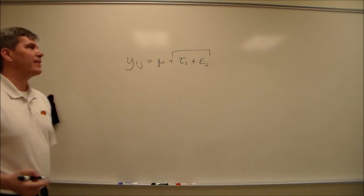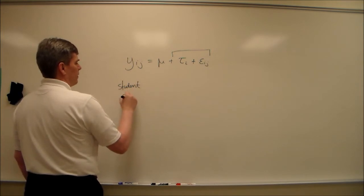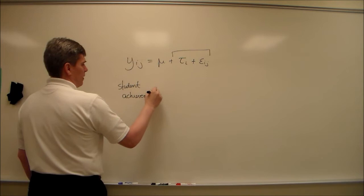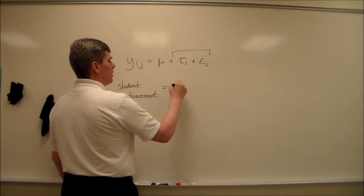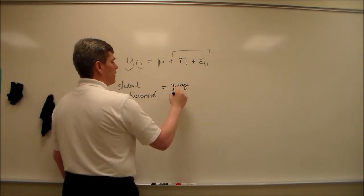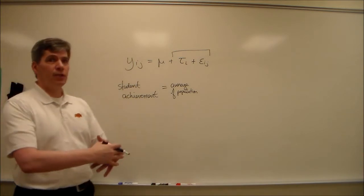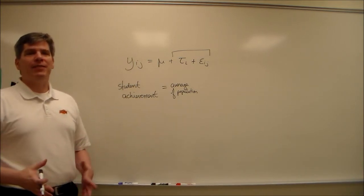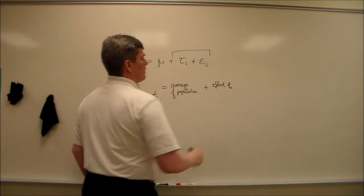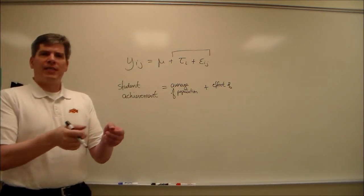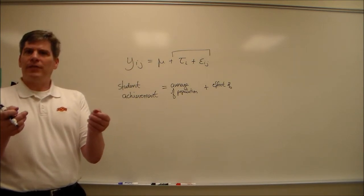Here's a good setting for this. We want to explain student achievement. Well, according to this model, this is going to equal some average from the entire population. This mu is the student-wide average achievement, however we're measuring achievement, plus the effect. Well, if we want to compare the effect of one textbook with the other, then that would be a fixed effect, because we care about how these two textbooks compare.